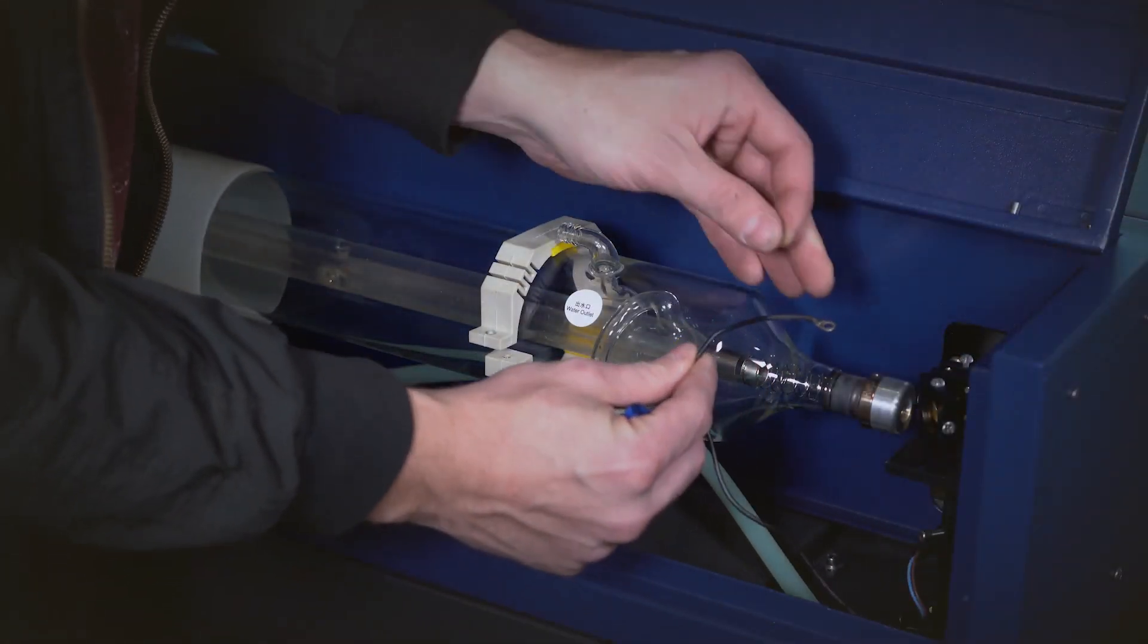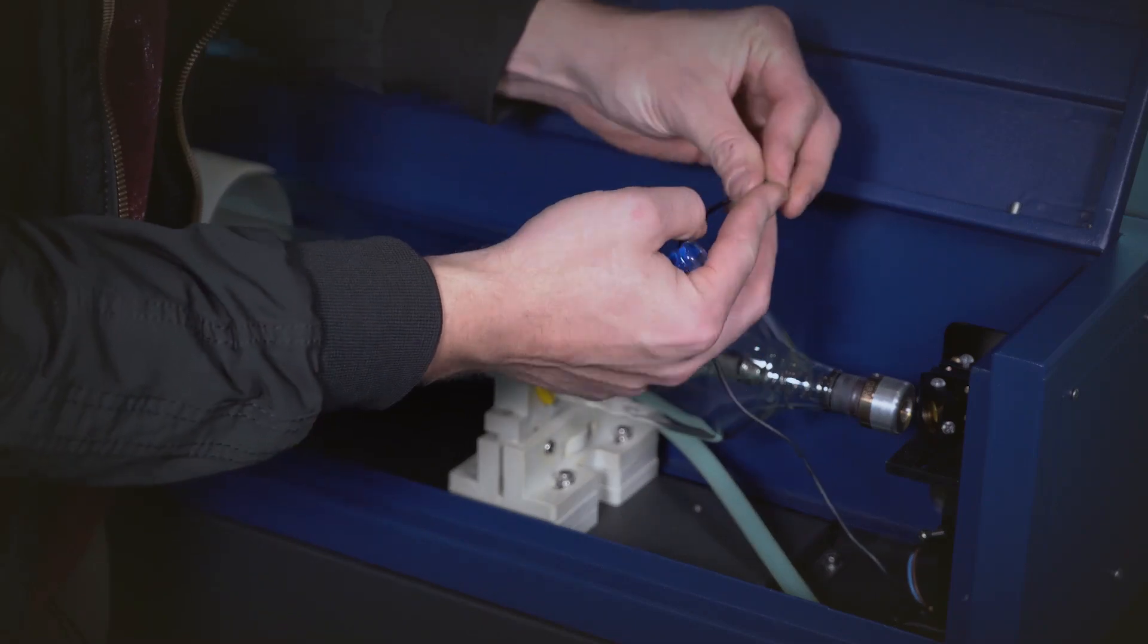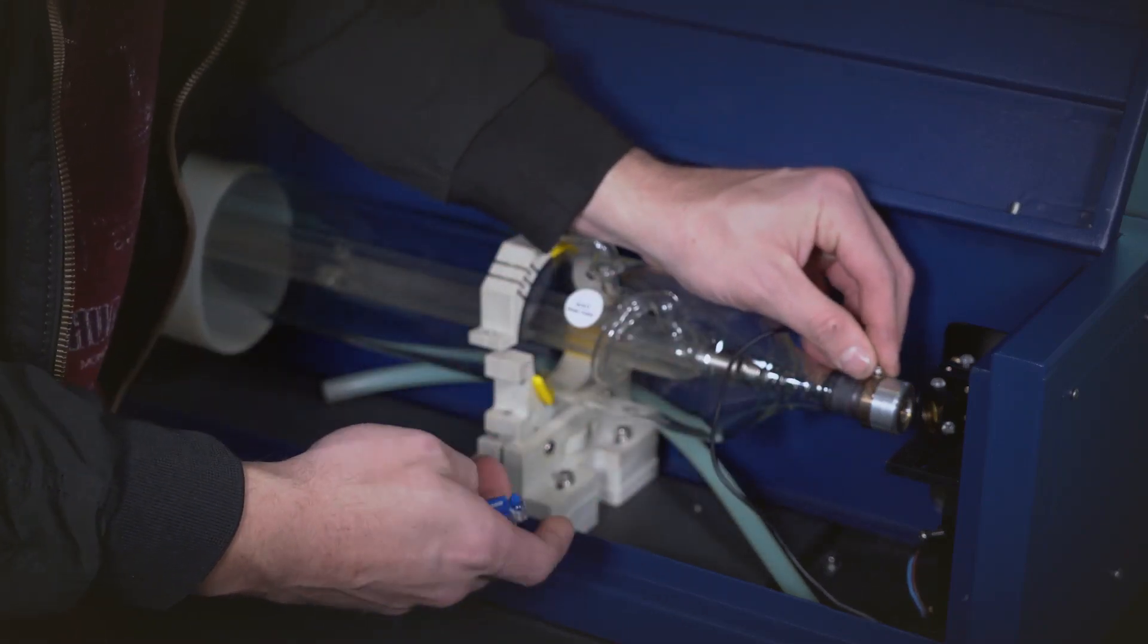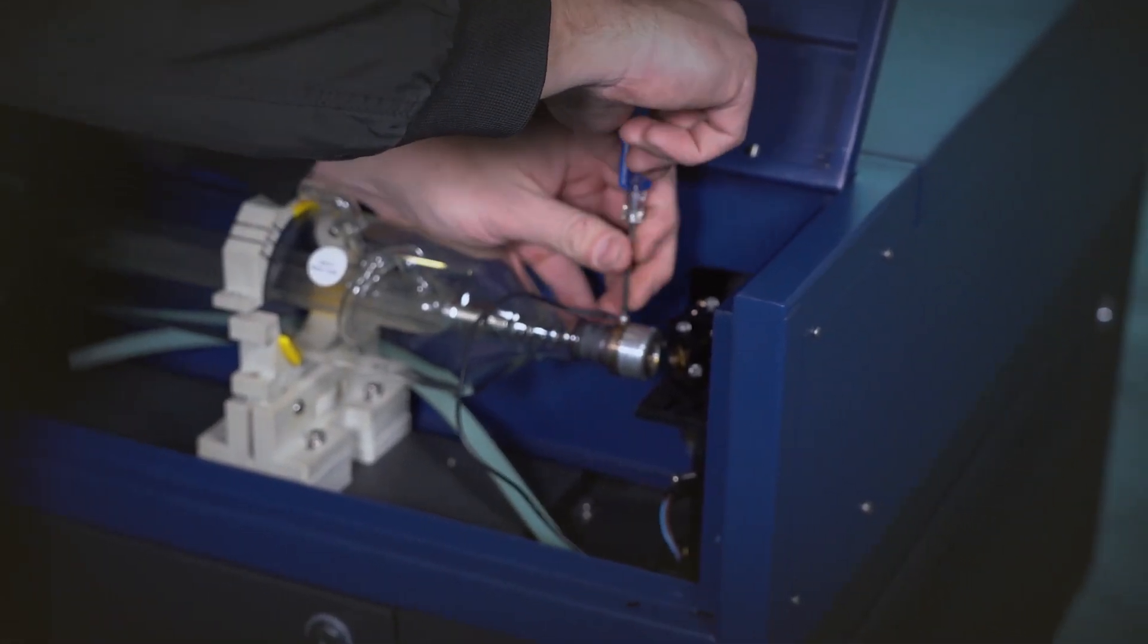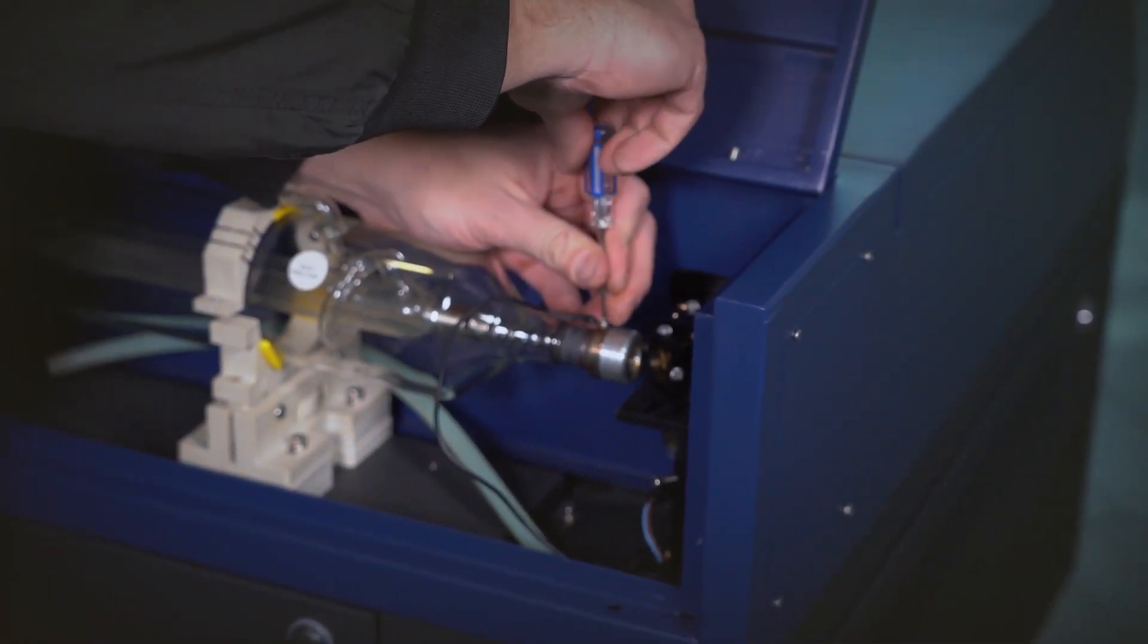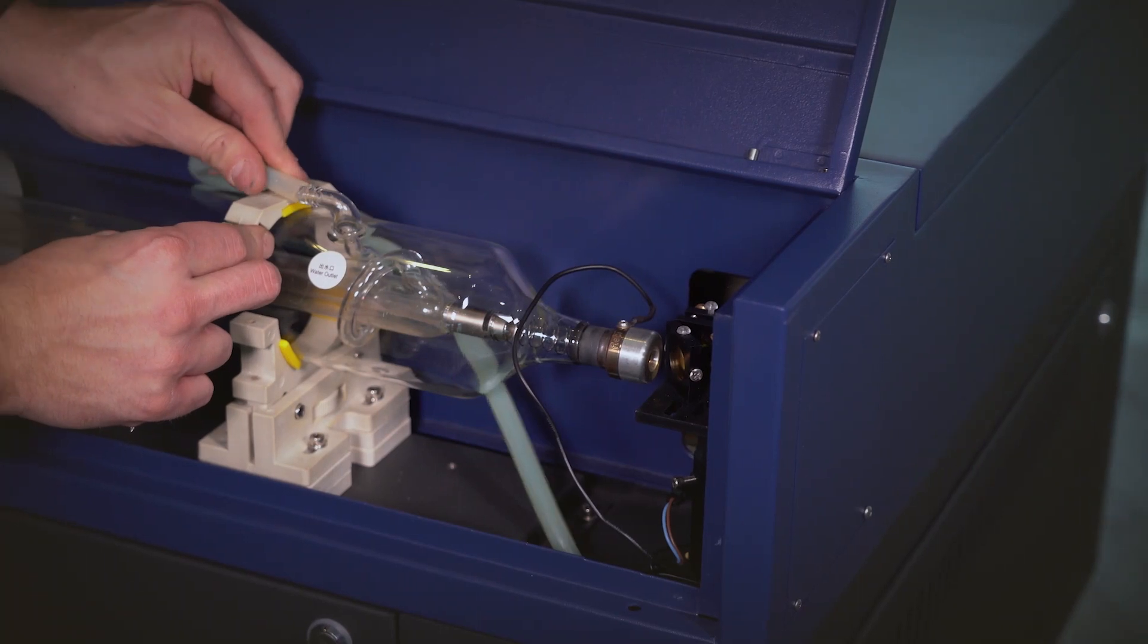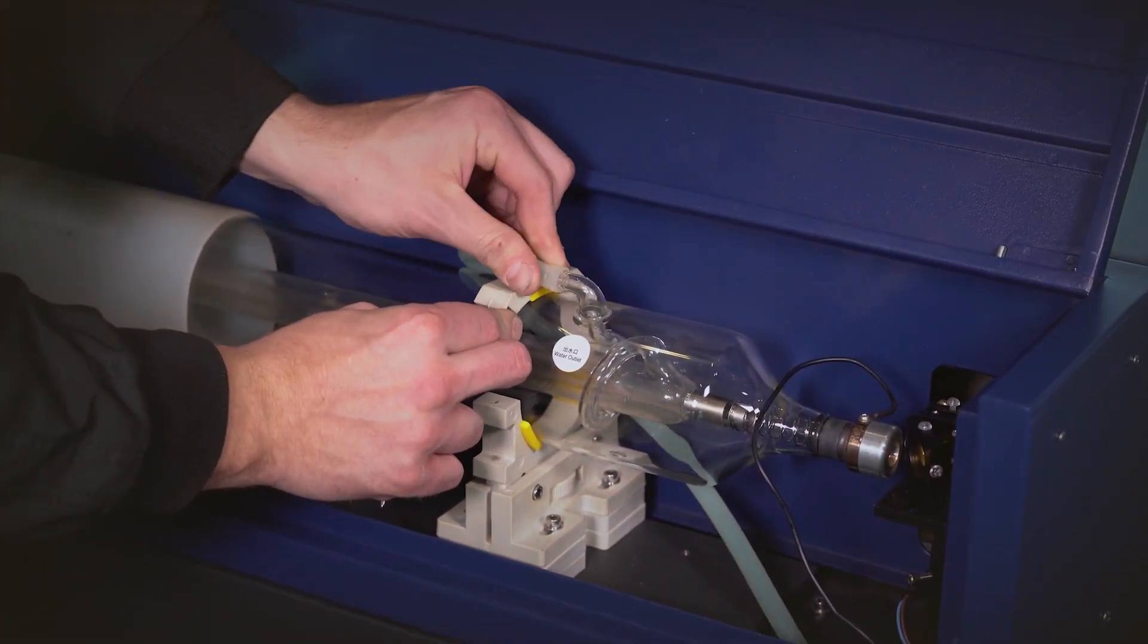Now we're going to redo this wire. We're simply screwing it into the side of the tube with your Phillips screwdriver. Put the water tube back on this side.